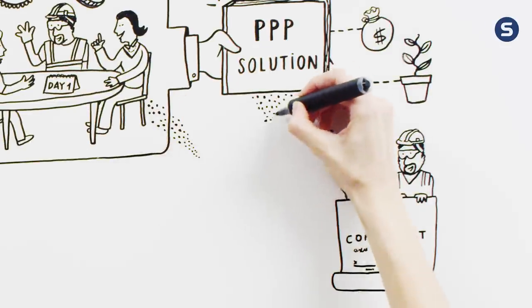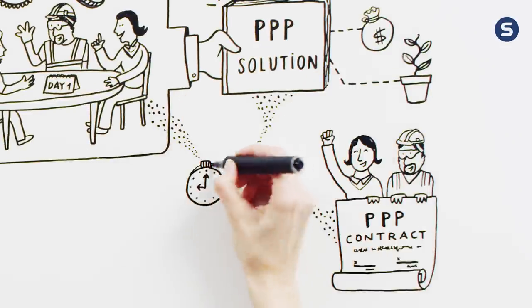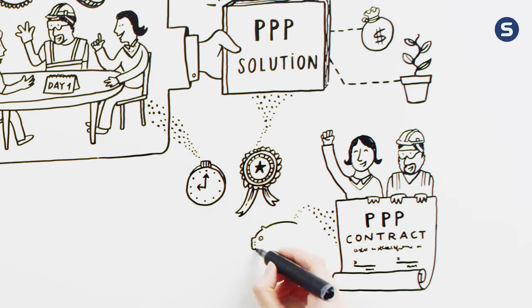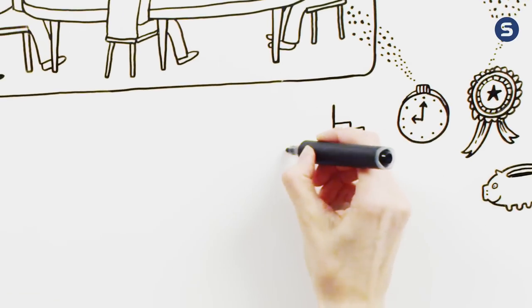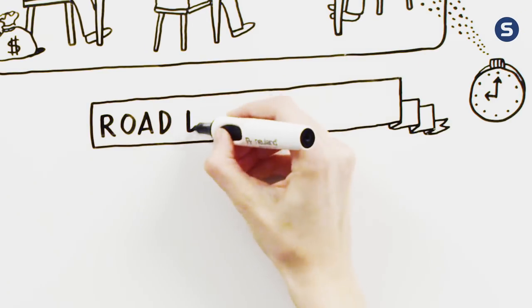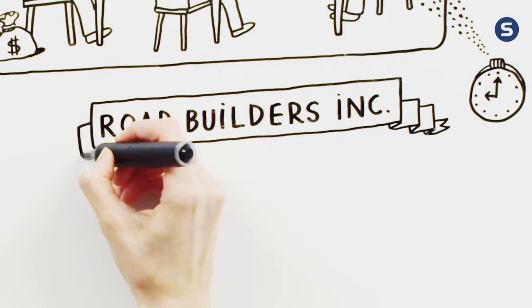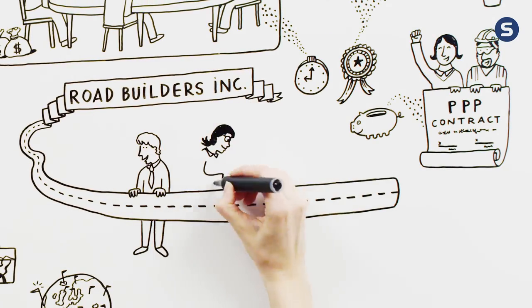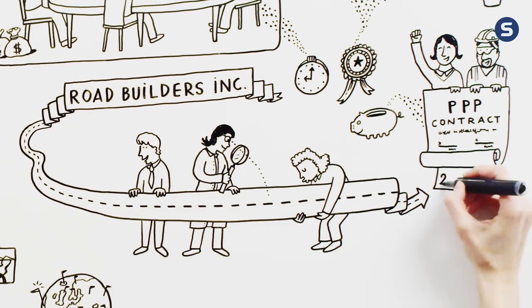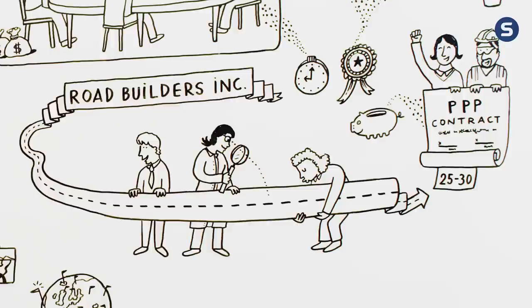This collaborative team works hard to make sure the project is on time, on quality, and budget-certain. After this, the team forms a new company. Let's call it Road Builders Incorporated, which has a single mission: to build the road and make sure it meets the agreed-upon contract of typically 25 to 30 years every day.